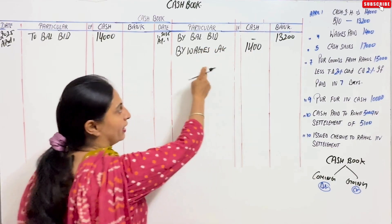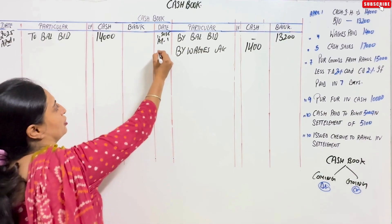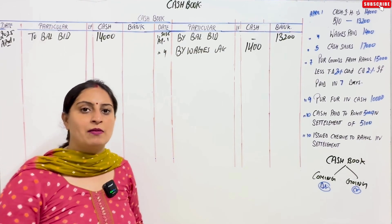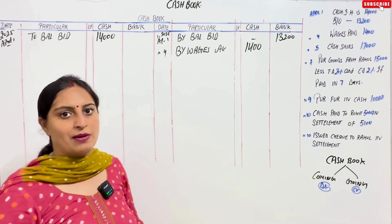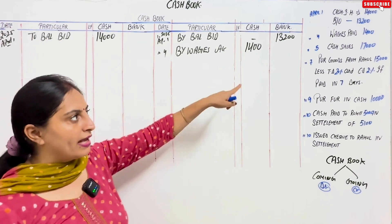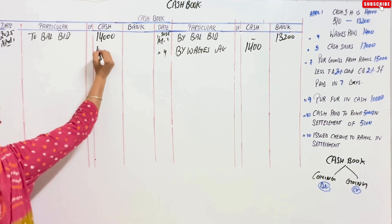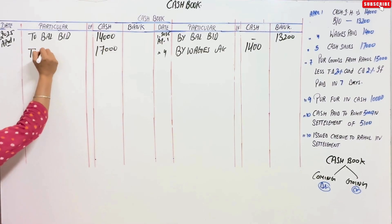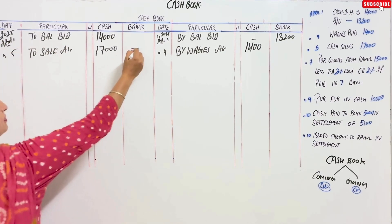We write the amount ₹25,000 for wages, then add the explanation and date. Next is cash sales: if you are selling goods and getting paid in cash, money is coming in. So you will write this on the debit side and put the amount in the cash column — to Sales Account. This is the April 5 entry, which is not in the bank column, so it will be in cash only.